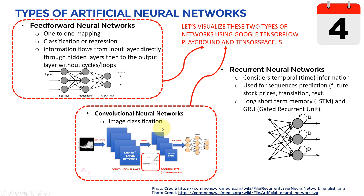There are different types of artificial neural networks. In this course we'll primarily focus on the first two types. The three types are: first, feed-forward artificial neural networks; second, convolutional neural networks, or CNN for short; and third, recurrent neural networks. We're going to focus primarily on visualizations of the feed-forward and convolutional neural networks.